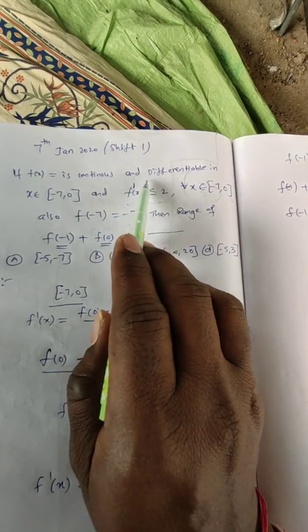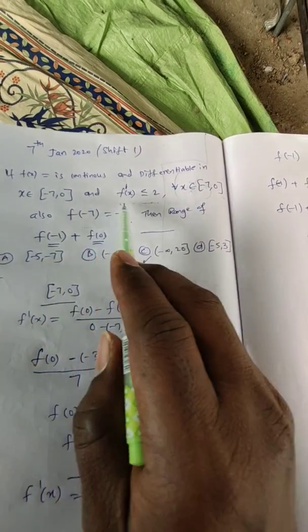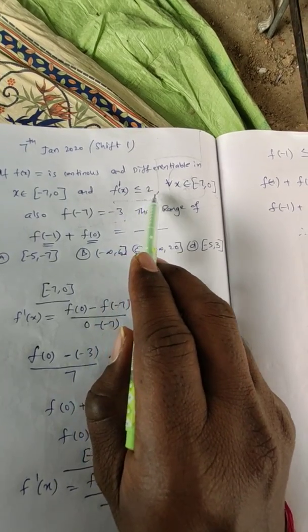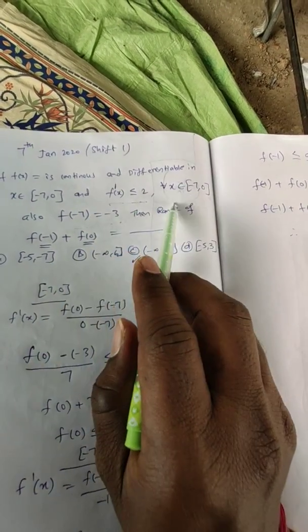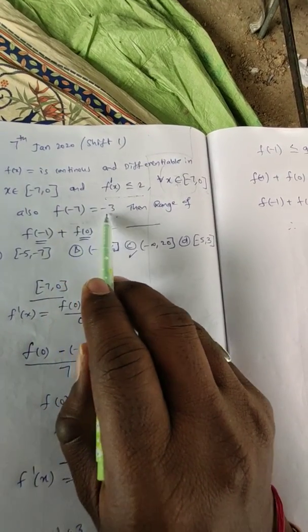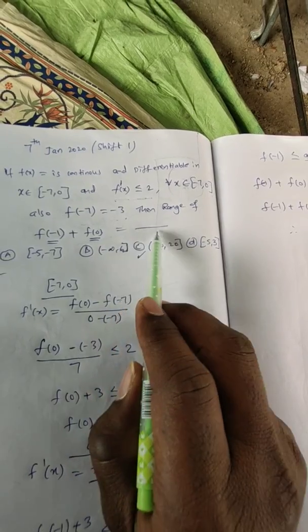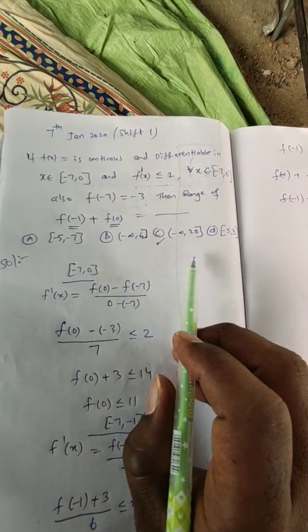If f(x) is a continuous and differentiable function in x belongs to closed interval [-7, 0] and f'(x) is less than or equal to 2 for all x belongs to [-7, 0], also f(-7) = -3, then the range of f(-1) + f(0) is equal to what? Options are given here clearly.